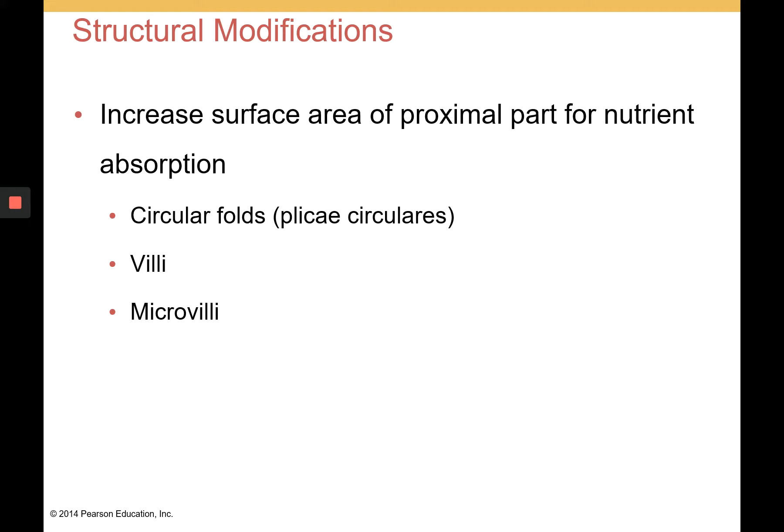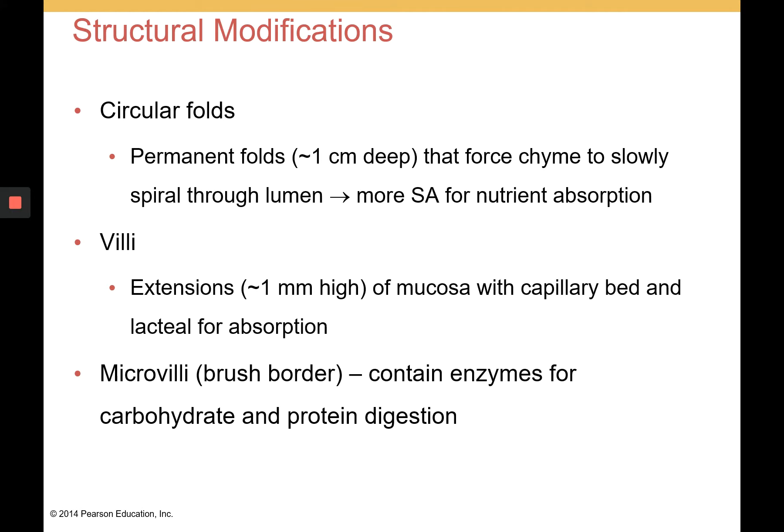The circular folds are also known as plicae circularis. These are permanent folds of the mucosa about one centimeter deep, and they force chyme to slowly spiral through the lumen. This gives more surface area for nutrient absorption and also aids the movement of chyme.